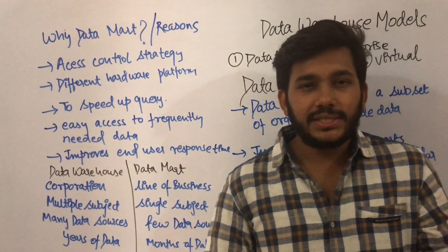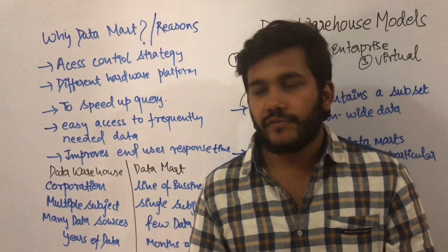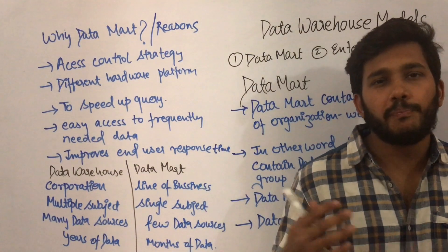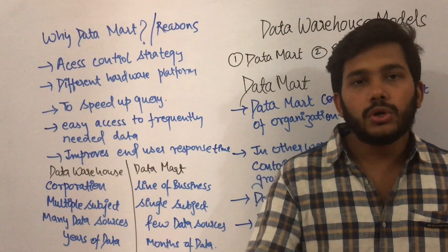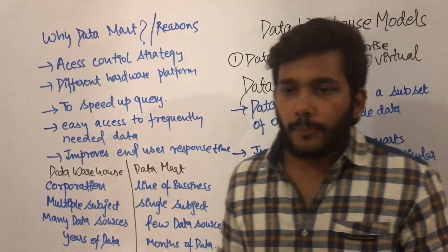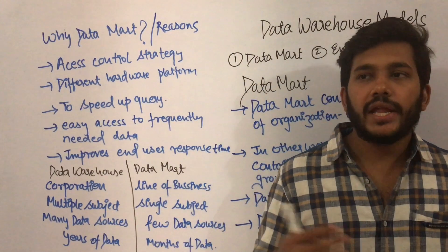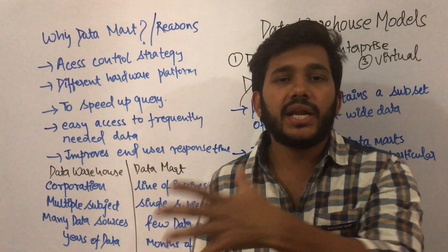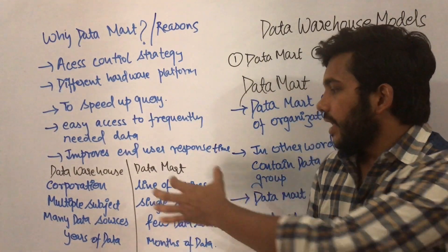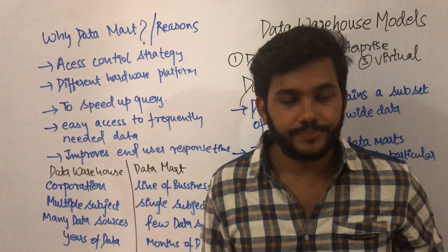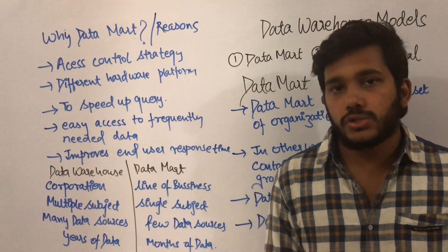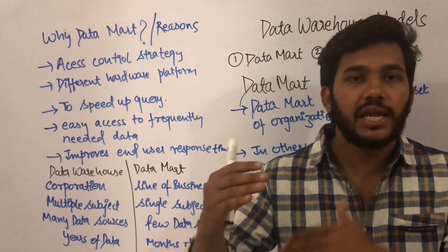Now, what is the difference between data warehouse and data mart? Data warehouse is mainly used for big corporations, like IT industries - Google can have their own data warehouse with data from different departments. Data mart is for a line of business - if you want to store data for any one branch only, you create a data mart. In a data warehouse we have multiple subjects like computer science, electronics, mechanical, civil, and so on; but a data mart keeps data of one particular subject like computer science only.